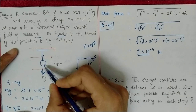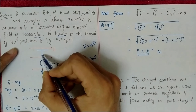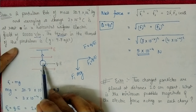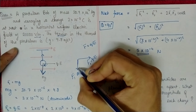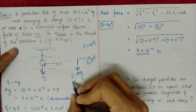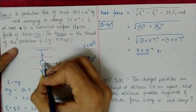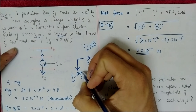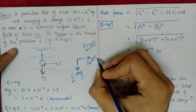Since this is a pendulum bob, the net force on it equals the tension in the thread (opposite direction). Two forces act on it: gravitational force F₁ = mg acting downward, and electric force F₂ = QE acting horizontally (due to the horizontal electric field).